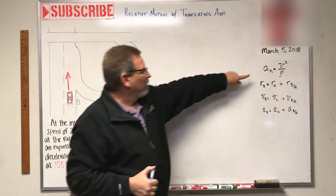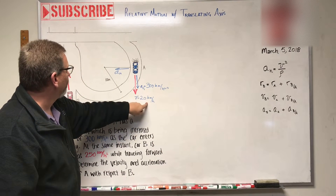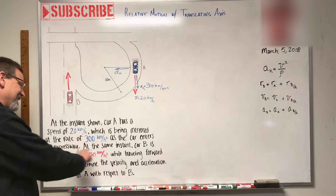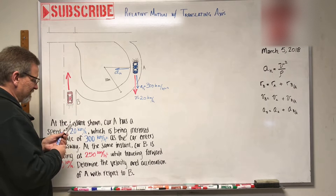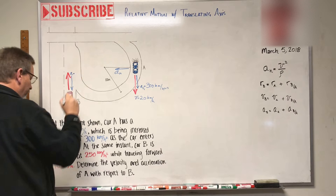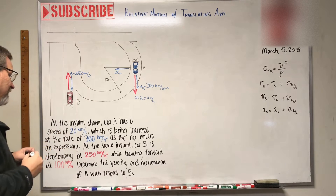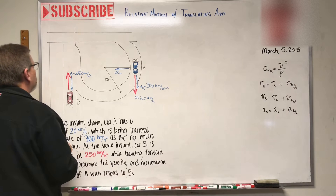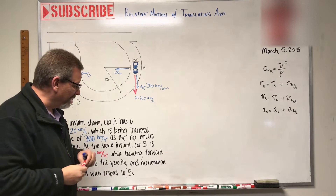The normal acceleration is calculated as v² divided by ρ. At the same instant, car B is decelerating — moving forward at 100 km/h but with an acceleration of 250 km/h² in the opposite direction (i.e., decelerating). So car B's velocity is 100 km/h.